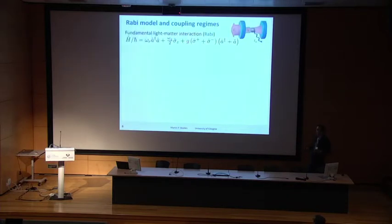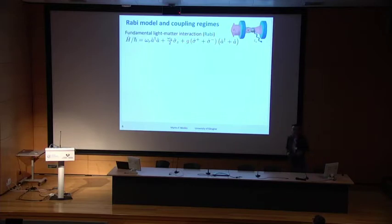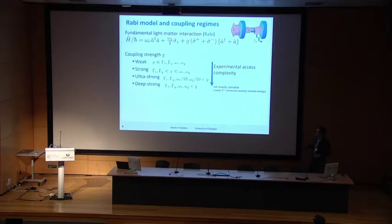Now in this talk I will focus on the Rabi model. Again, there's a graphical depiction which you've probably seen many times at this conference. Depending on the coupling strength — whether it's small, strong, or large — one can distinguish several regimes.